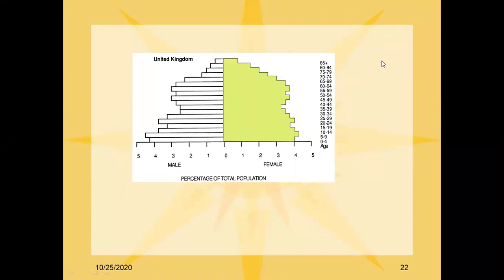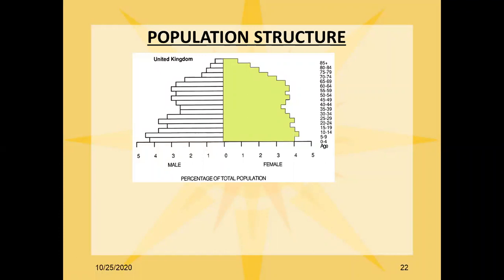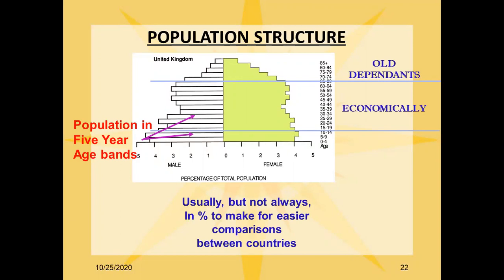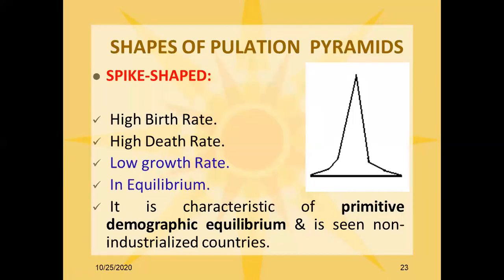The population pyramid of the United Kingdom shows percentage of total population. The vertical axis shows age groups in 5-year intervals. Males are on the left side and females on the right. The pyramid distinguishes the older dependent group, the economically active group, and the young dependent group from 0 to 14 years of age.